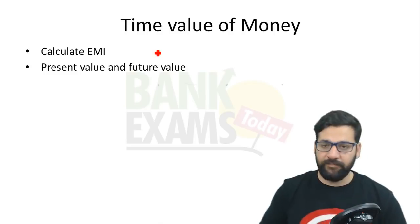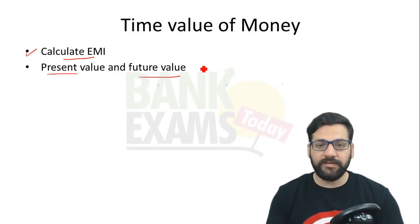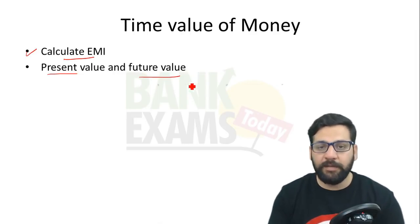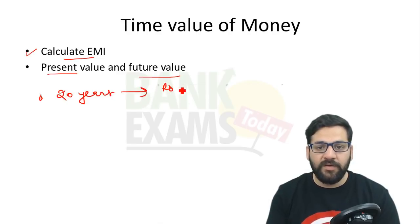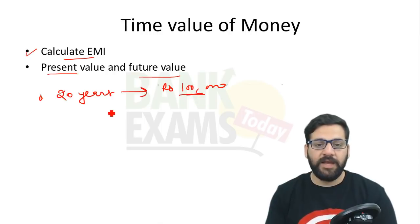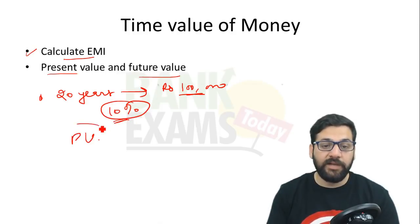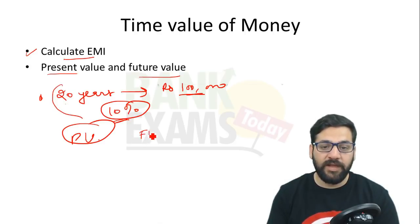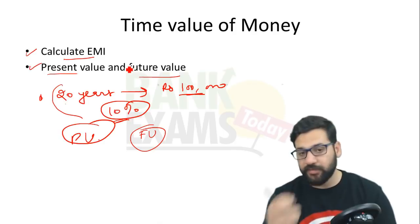In the Time Value of Money chapter there are simple questions about EMIs and the present value and future values of annuities, as well as present value and future value of money. For example, there can be a question like: for the next 20 years you are going to deposit ₹1 lakh every month and the risk-free interest rate is 10% — what is the present value or future value? There can also be questions about calculation of EMIs.